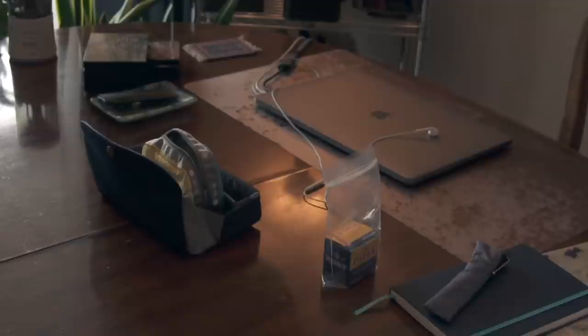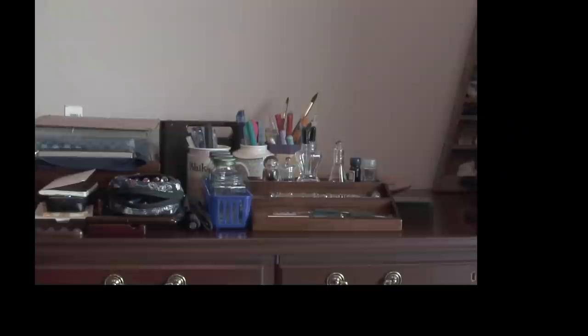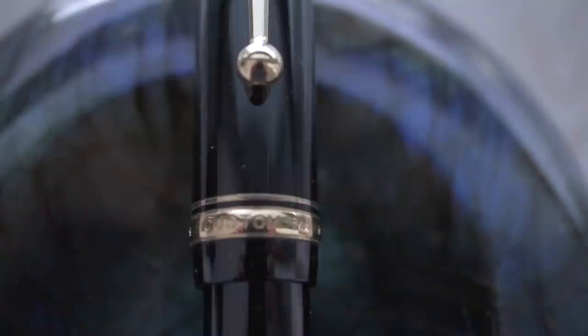I prepared for this by clearing off my desk and putting all the items that I did not want to use over on a separate table. The Custom 74 has a gold nib, and in the States it's around $160, and you can get them for under $100 here in Japan. This one has a soft fine medium nib, and I thought that was a nice nib size to kind of represent more people.